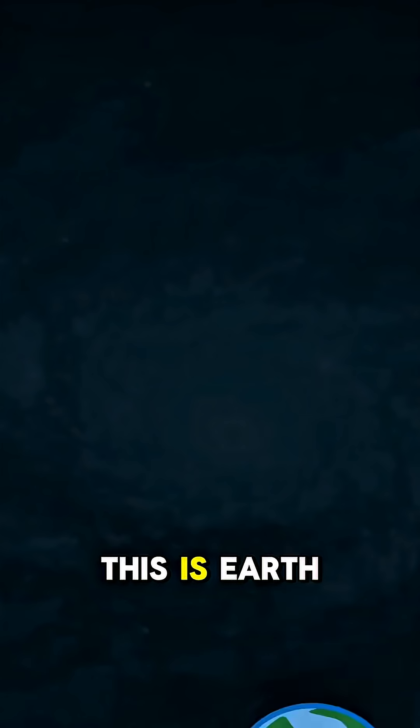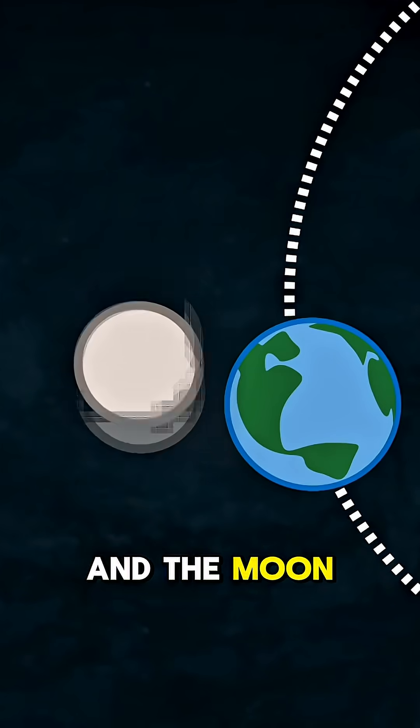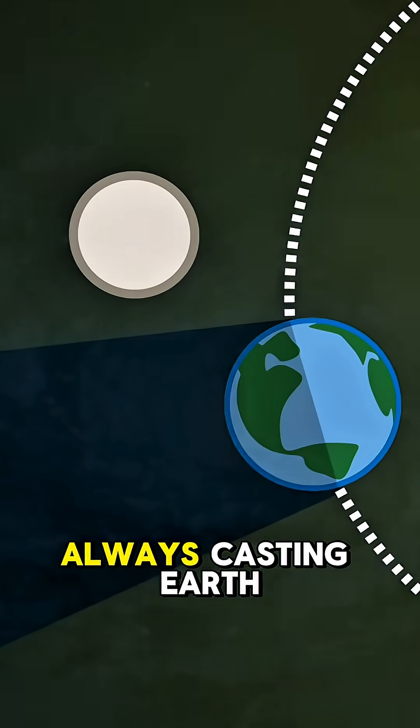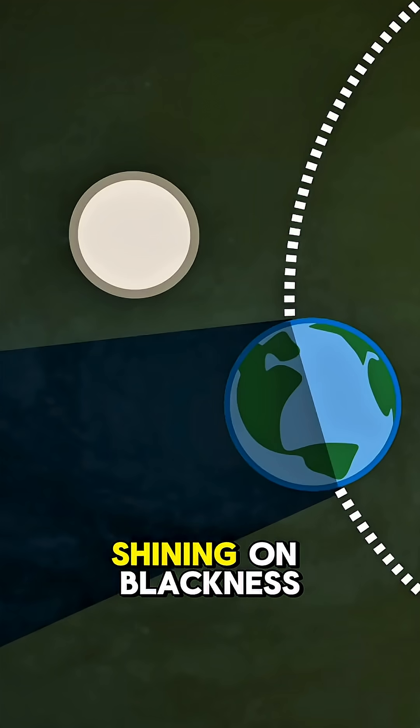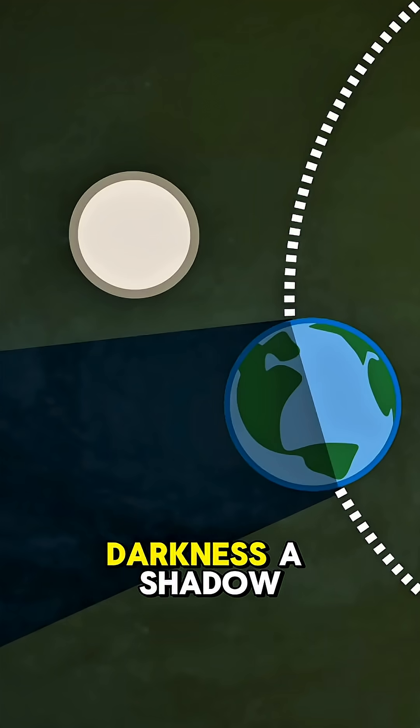If your face is the brilliant sun, this is Earth, and the moon is over here. The sun is always casting Earth's shadow into space. It's always there no matter what. It's just a shadow in darkness.